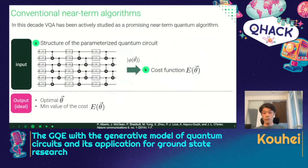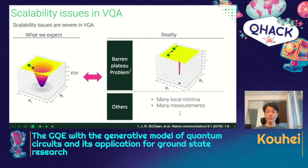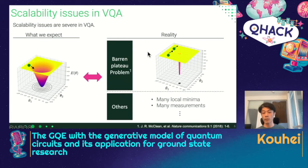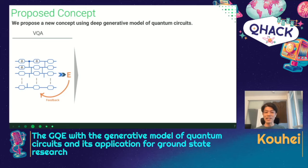There are many variants of VQA — for ground state search, for machine learning, for time evolution, and so on. It has been actively studied in this decade. However, there are scalability issues in VQA. What we expect in the optimization of VQA is that optimization directly goes to the global minima. But in reality there are scalability issues like the barren plateau problem or many local minima and many measurements. Those scalability issues become severe when we increase the program size or number of qubits. So we definitely need a near-term algorithm beyond VQA.